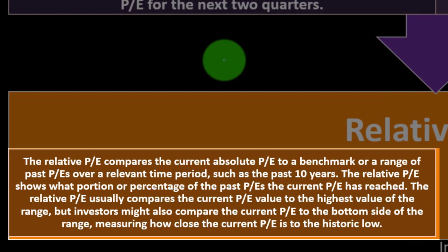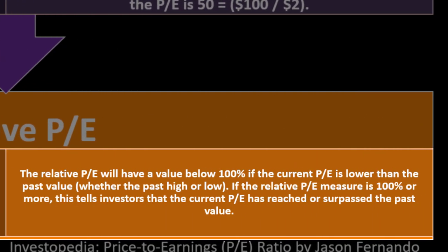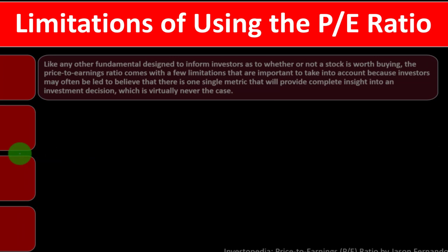The relative P/E compares the current absolute P/E to a benchmark or a range of past P/Es over a relevant time period, such as the past 10 years. It shows what portion or percentage of past P/Es the current P/E has reached. Relative P/E usually compares the current P/E to the highest value in the range, though investors might also compare it to the bottom of the range. A relative P/E below 100 means the current P/E is lower than the past value; a relative P/E of 100 or more indicates the current P/E has reached or surpassed that past value.